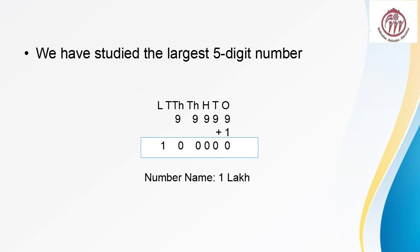In the last video, you studied numbers up to 5 digits. What is the largest 5-digit number? Yes, it is 99999. Now if we want to get the next number what will we do? We will add 1.